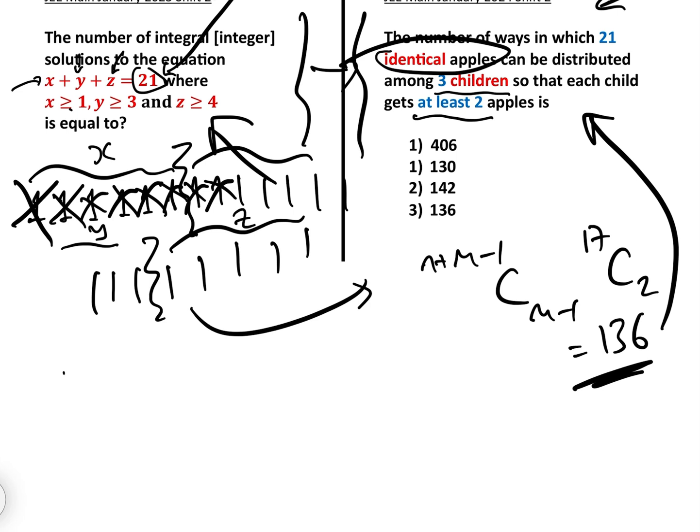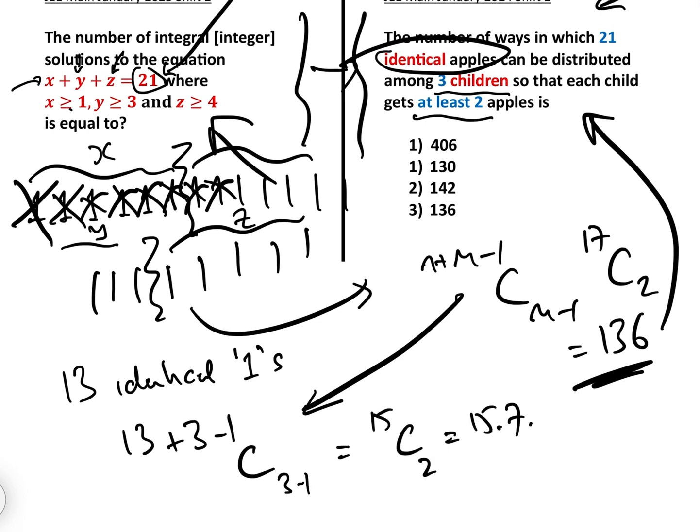That will leave us with 13 identical ones to distribute between x, y, and z. The way to do that is using this formula, which is 13 plus three minus one C three minus one, which equals 15 C 2, which equals 15 times 7, which equals 105. And that is the answer to that question.